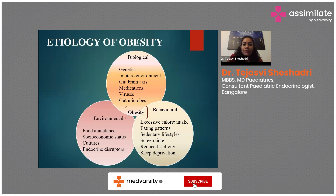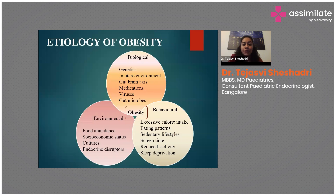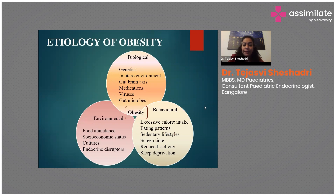The main etiology of exogenous obesity is environmental: food abundance, cultural factors, endocrine disruptors, and socioeconomic status. There are also biological contributors including viruses, medications, gut microbes, and the intra-uterine environment — such as gestational diabetes, SGA, or IUGR — which raise the risk of developing obesity. Genetics plays a role too, as does behavioral factors: excessive calorie intake, increased screen time, sedentary lifestyle, and sleep deprivation due to social media use.